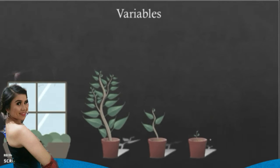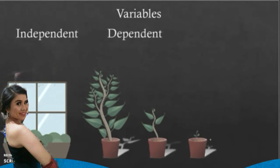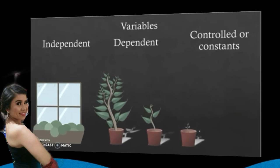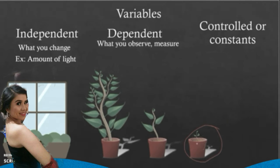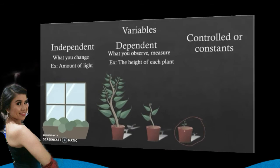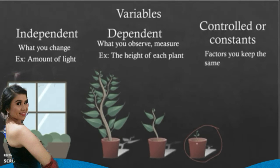There are three different types of variables that we need to be aware of: independent variables, dependent variables, and controlled or constant variables. An independent variable is what you will change in an experiment. A dependent variable is what you observe or measure. Controlled variables, or constants, are the factors you keep the same. Those are the important terms you also need to learn in this topic: observations versus inferences, prediction versus hypothesis, and independent, dependent, and controlled variables.